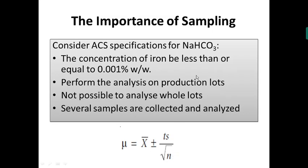If you have 5 or 10 sodium bicarbonate bottles, n is either 5 or 10. It is not possible to analyze each and every bottle purchased from the market supplied by ACS. Instead, you analyze some representative samples and confirm that the true value of 0.001% lies between x̄ − t·s/√n and x̄ + t·s/√n. This is how we can ascertain whether the impurity iron in sodium bicarbonate is 0.001%, lesser, or greater — and that is how sampling is very important.